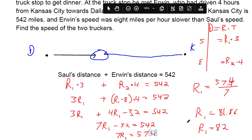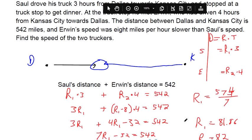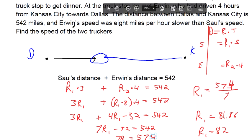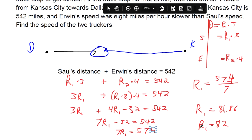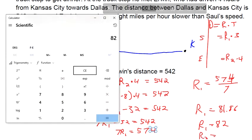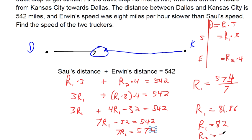So 82 miles per hour is the first trucker Saul's speed. And Erwin's speed, R sub 2, was 8 miles per hour slower, so Erwin's speed is 74 miles per hour.